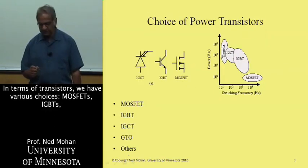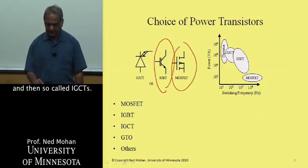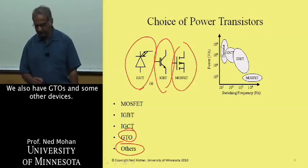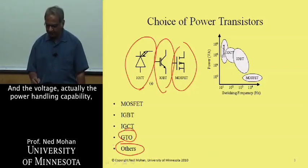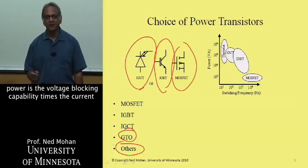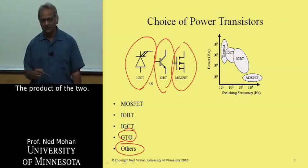In terms of transistors, we have various choices: MOSFETs, IGBTs, and so-called IGCTs. We also have GTOs and some other devices. The power handling capability is really the voltage blocking capability times the current handling capability — the product of the two.